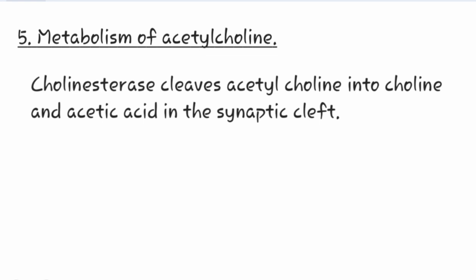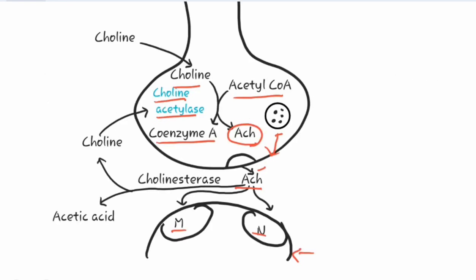The fifth step is metabolism of acetylcholine. When acetylcholine is released into the synaptic space, there are three pathways: first, it binds to the muscarinic receptor; second, it binds to the nicotinic receptor; and third, the unutilized acetylcholine is cleaved into choline and acetic acid in the presence of the enzyme choline esterase.